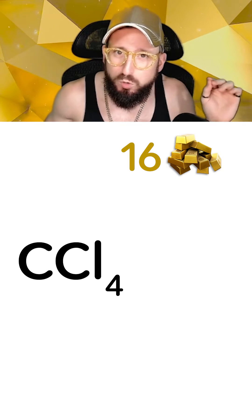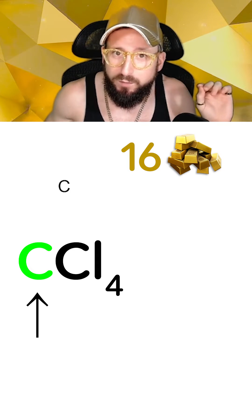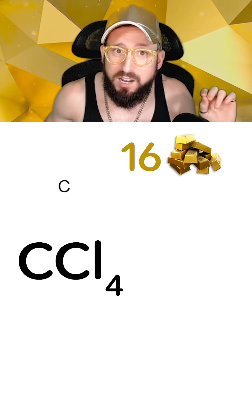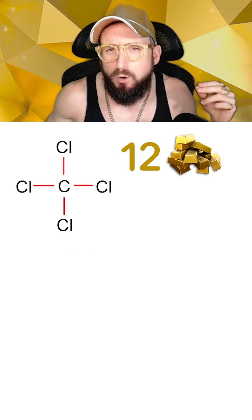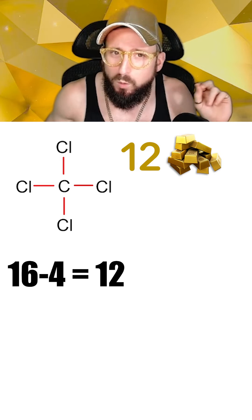The first step is to draw your central atom, which will usually be the first element in your chemical formula. In this case, it's carbon. The next step is to connect the other elements around it with single bars, which in this case are the chlorines. Doing so, we can see that we've used four bars, which means we have 12 left to work with.